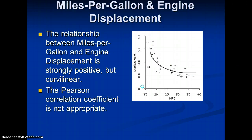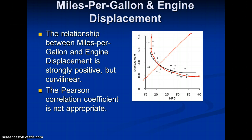The relationship between miles per gallon and engine displacement is strongly positive, but it's curvilinear. If you were to plot a linear line it would go through the data, but a linear line is inappropriate — the real relationship is curvilinear. Therefore, a Pearson correlation coefficient is not appropriate to measure the level of association between miles per gallon and engine displacement.